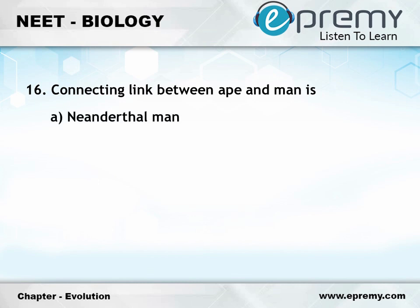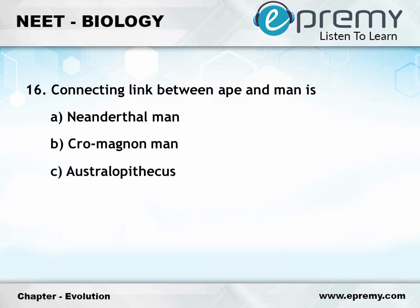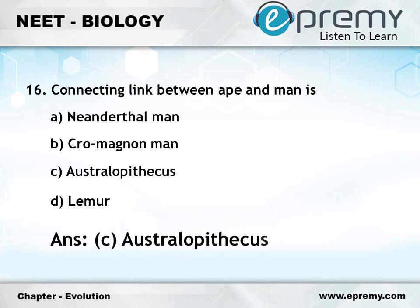Question number 16: Connecting link between ape and man is. Option A: Neanderthal man. Option B: Cro-Magnon man. Option C: Australopithecus. Option D: Lemur. And the answer is Option C: Australopithecus.